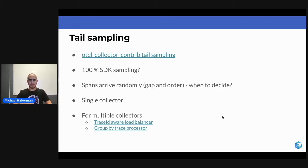If you have a trace composed out of 10 spans, nobody guarantees that you're getting the spans in a specific order.